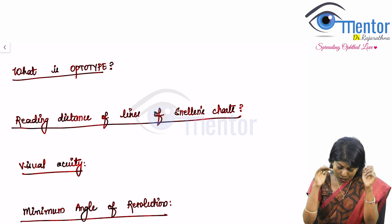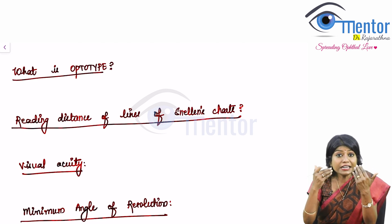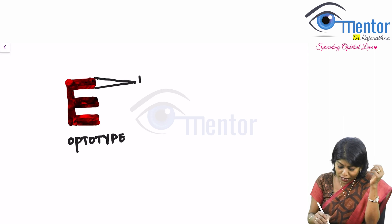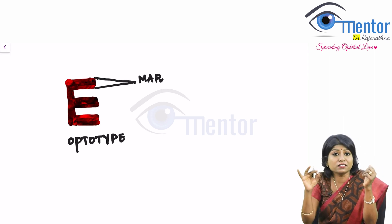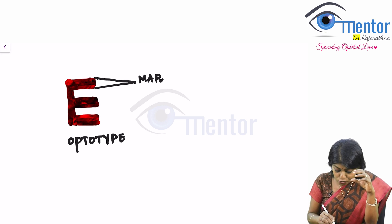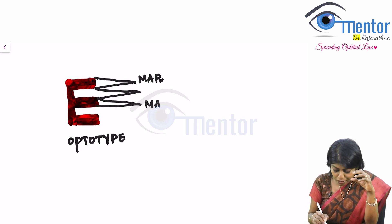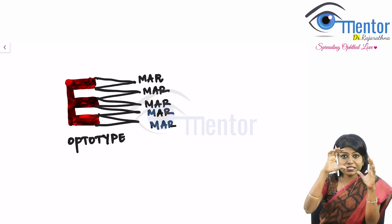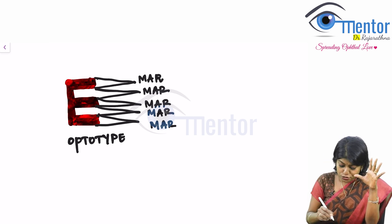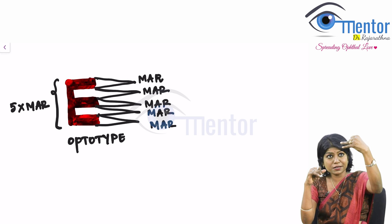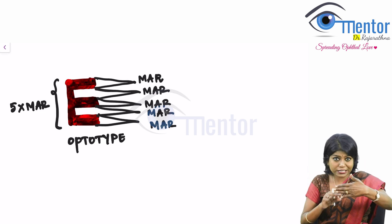Now the optotype is designed in such a way that each limb of it subtends what is called as minimum angle of resolution at the foveola. So each limb meaning the colored portion and the blank space. So each of it subtends minimum angle of resolution what we call MAR. So in one Snellen's letter you have 5 MARs. So the entire optotype is 5 times MAR. The first limb, the blank space, the second limb, the blank space and the third limb, horizontal limbs.